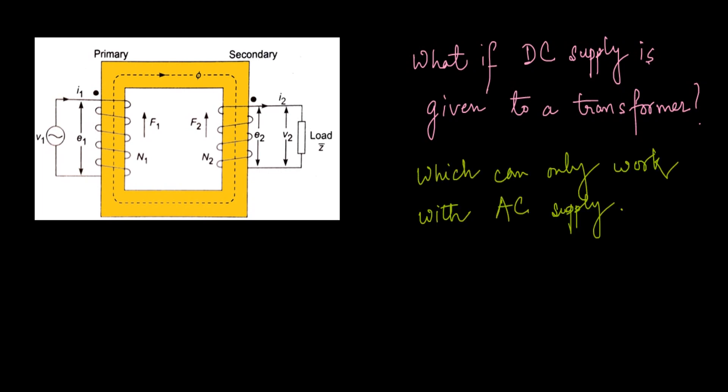Here I have given a schematic diagram of a transformer where the source drawn here is AC, as usual. But here we are replacing this AC source with a DC supply.